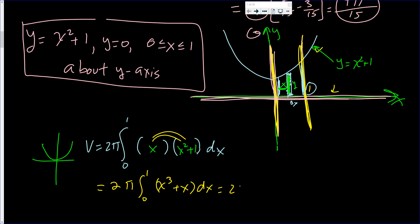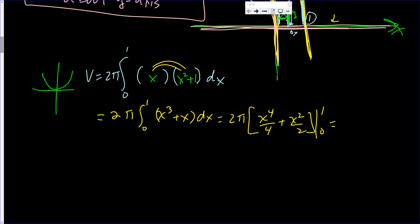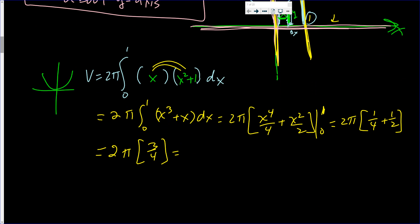So what we get is 2π times the integral from 0 to 1. Distributing gives x³ + x, and integrating gives x⁴/4 + x²/2, from 0 to 1. Plugging in 0 gives zero, so we plug in 1: one-quarter plus one-half equals three-quarters. Multiplying by 2π gives 3π/2 — that's the volume.